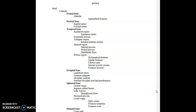Now that we have seen some of the bone markings, let's look at the actual structure list. The bones are divided up into the appendicular and axial skeleton. We're going to start with the axial skeleton, and one of the major parts of the axial skeleton is the skull.